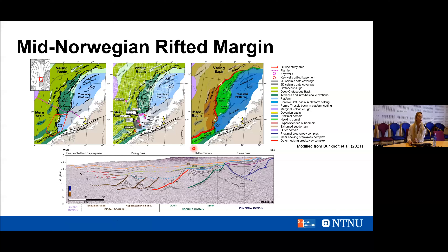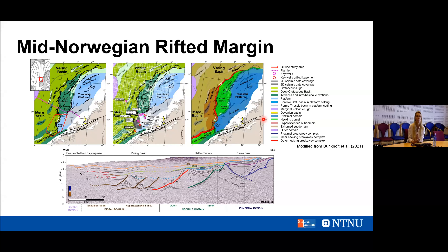Jumping right into the mid-Norwegian margin, as you can see from the top map, we're located on the eastern conjugate of the North Atlantic rift, with the mid-Norwegian rifted margin just offshore Trondheim and the Norwegian mainland. The map on the left shows the different structural features on the mid-Norwegian rifted margin, including my seismic dataset and the wells incorporated in this study. In my study area, the Freyja High and the Krochfall complex is located in the southern part of the margin, and the KFC actually constitutes a combined inner and outer necking breakaway complex.